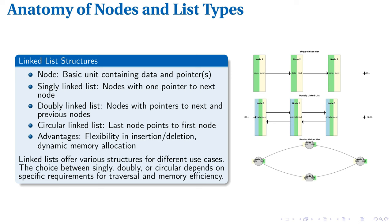The choice between these structures depends on specific needs. For instance, a music playlist app might use a doubly-linked list for easy navigation between songs. Singly-linked lists excel in forward-only scenarios, while doubly-linked lists shine in applications requiring bidirectional traversal, such as browser history. Each type offers unique advantages in flexibility, simplicity, and memory management, catering to different use cases.